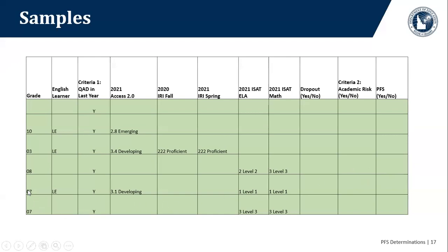The seventh grader is clearly PFS — not proficient on the ACCESS test and also not proficient on ISAT math. Finally, the last student has a QAD in the last year but is proficient on both ISAT English language arts and ISAT math. So the answer is no — this student is not academically at risk and therefore is not priority for services.